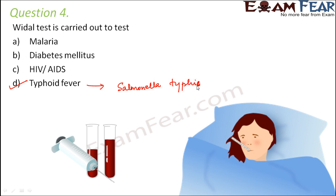This test is all about finding if the presence of this bacterium can be detected in the patient's blood serum. Suspensions of somatic and flagellar antigens are used to find out the presence of somatic and flagellar agglutinins of Salmonella typhi.